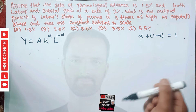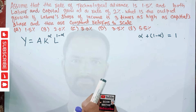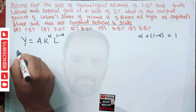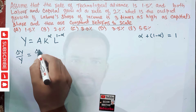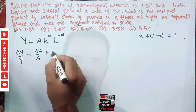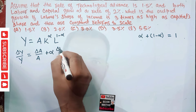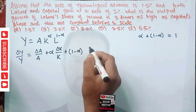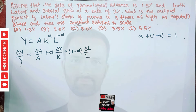Now let us go to the question again. We are told the rate of technological advance is 1.5%. The growth equation in the Cobb-Douglas production function is: ΔY/Y — the growth rate of output — is equal to ΔA/A (the growth rate of technological advance) plus alpha times ΔK/K (the growth rate of capital) plus (1 minus alpha) times ΔL/L (the growth rate of labor).